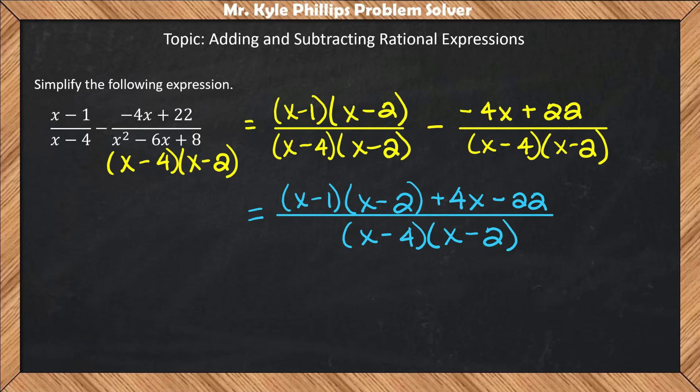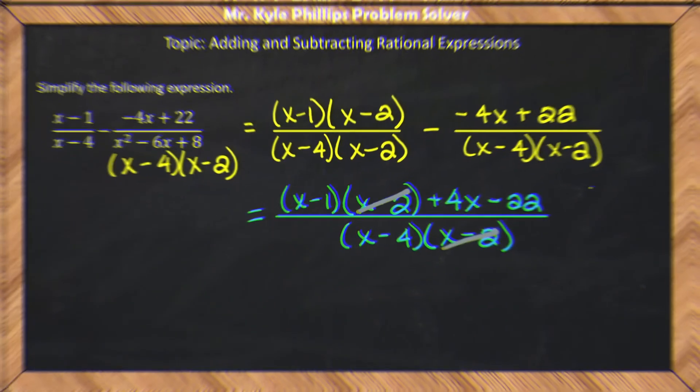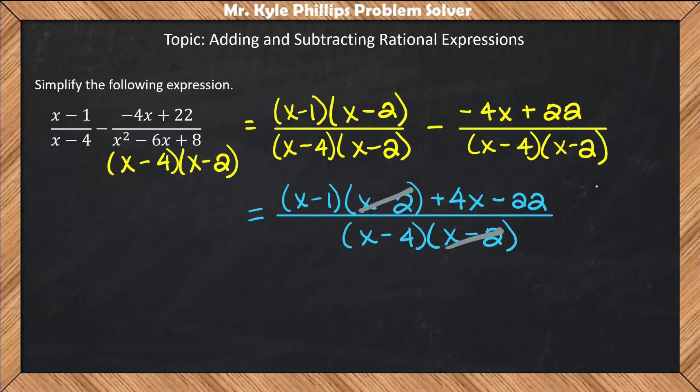Now that this is one fraction, we can cross out like binomials. So this x minus 2 and this x minus 2 can cancel out. All right. So that is actually not true at all. So shout out to my brother, Corey Phillips, also a math teacher,